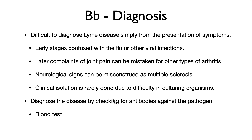How is Lyme disease diagnosed? It's extremely difficult to diagnose simply from the presentation of symptoms. The early stages can be confused with the flu or other viral infections, although the bullseye rash — if it appears — is a reasonable indicator of this infection. Later complaints of joint pain can be mistaken for other types of arthritis, and neurological signs can be misconstrued as multiple sclerosis. Clinical isolation is rarely done due to difficulty culturing this organism. The disease is diagnosed by checking for antibodies against the pathogen in a blood test. If that test is positive, further tests may be done to confirm that it is actually Borrelia burgdorferi.